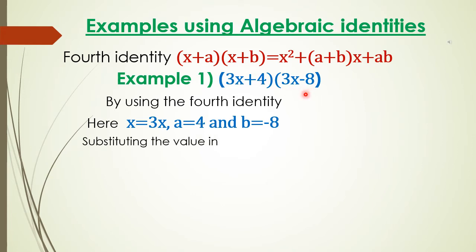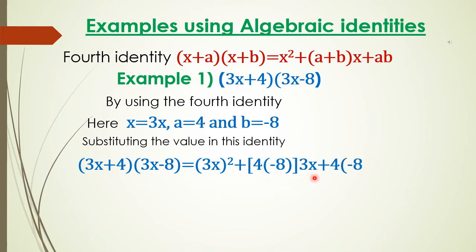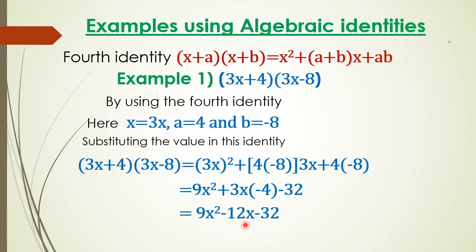Substituting the values in this identity: (3x + 4) into (3x - 8) is equal to (3x)² plus (4 + (minus 8)) into 3x plus 4 into (minus 8). So the answer is 9x squared minus 12x minus 32.